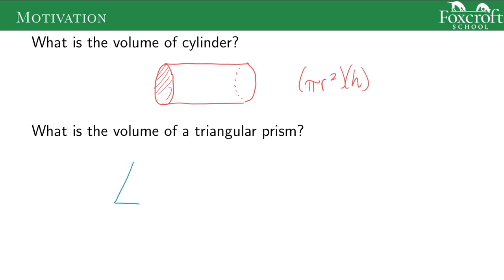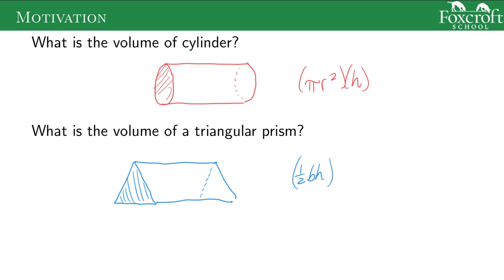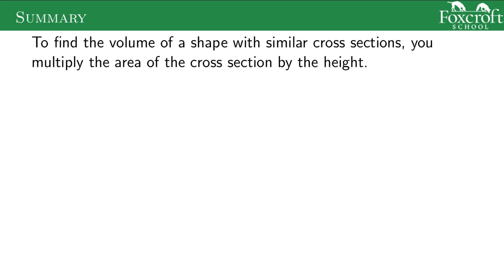What about the volume of a triangular prism? You have a triangle that goes to the right and another triangle at the end. You find the area of the triangle on the end — one half base times height — and multiply it by the length of the prism. This is the basic idea: when the cross-sections are the same, you take the area of that cross-section and multiply it by the height or width.